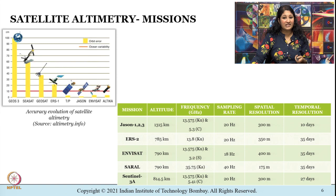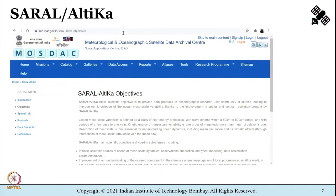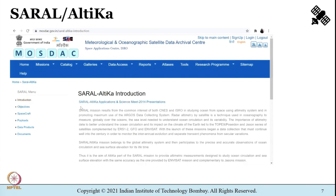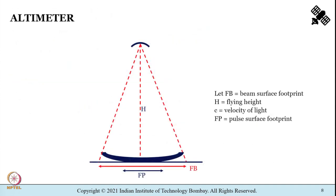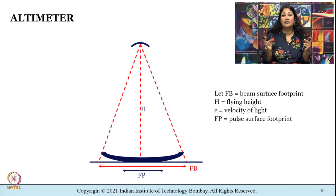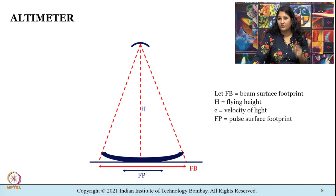Let me introduce you to SARAL-AltiKa. It was jointly developed by ISRO and CNES, the French space agency. SARAL-AltiKa provides altimetric measurements to study ocean circulation and sea surface elevations using a Ka-band altimeter at 35.75 gigahertz. Please feel free to visit the MOSDAC website for more details.